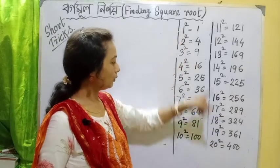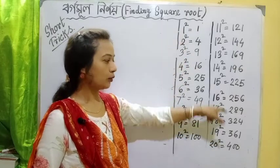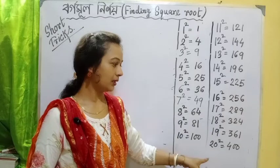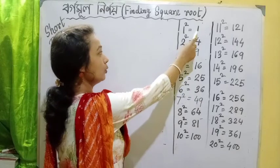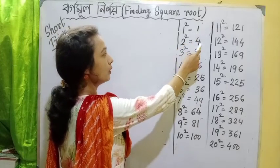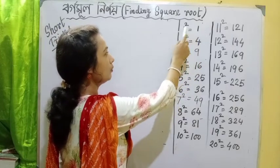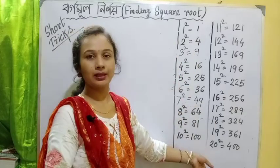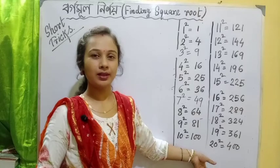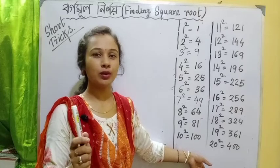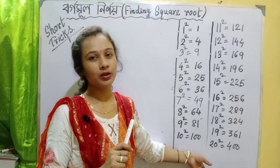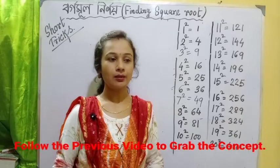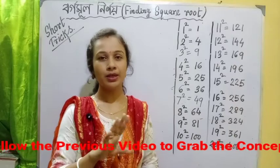Here we have 1 to 20. We can write this list and see the table. 1 squared is 1, 2 squared is equal to 4, 3 squared is equal to 9. Here we can write this list and see this trick. You can see this trick in the second part.